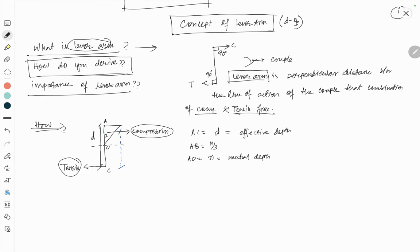If I consider the AOX triangle, then CG should be lying from this. So this is your one-third, this is your two-thirds. So in this scenario, AB should be N by 3.